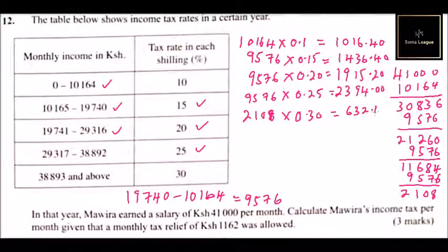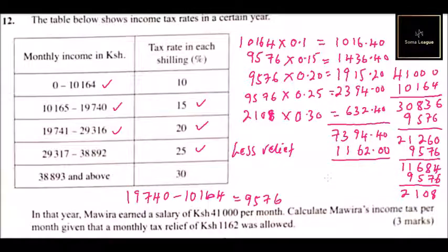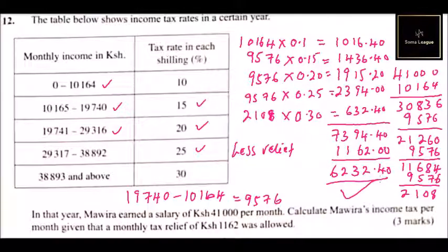We have now exhausted all the tax brackets. Adding up all the bracket taxes gives a total of seven thousand three hundred and ninety-four shillings forty cents. We then subtract the monthly tax relief of one thousand one hundred and sixty-two shillings, giving a final income tax of six thousand two hundred and thirty-two shillings forty cents. That is the amount Mawera will pay as tax, and that is the procedure we follow for this type of question.